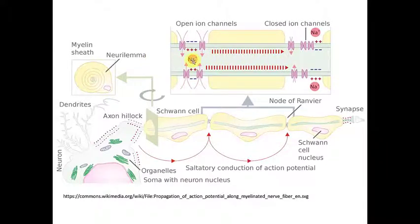The action potential reaches the node, gets a boost, pushes to the next node, gets another boost, and so on. If you were to observe this, you would see it would look like the action potential jumps from node to node, and that's what we call saltatory conduction.